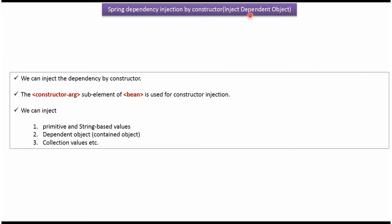This video tutorial covers how to inject a dependent object using Spring dependency injection by constructor. We can inject dependency by constructor. Constructor argument is a sub element of bean. Using this we can do dependency injection by constructor. We can inject primitive values, string based values, dependent objects, collection values, etc.